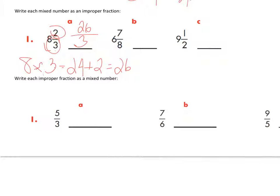Alright, let's try six and seven-eighths. Eighths is kind of large — I don't really feel like drawing that, so I'm going to use the math way again. Six times eight equals 48, plus seven — seven plus eight is 15, plus the 40 — 15 plus 40 is 55. So that would be 55 eighths.